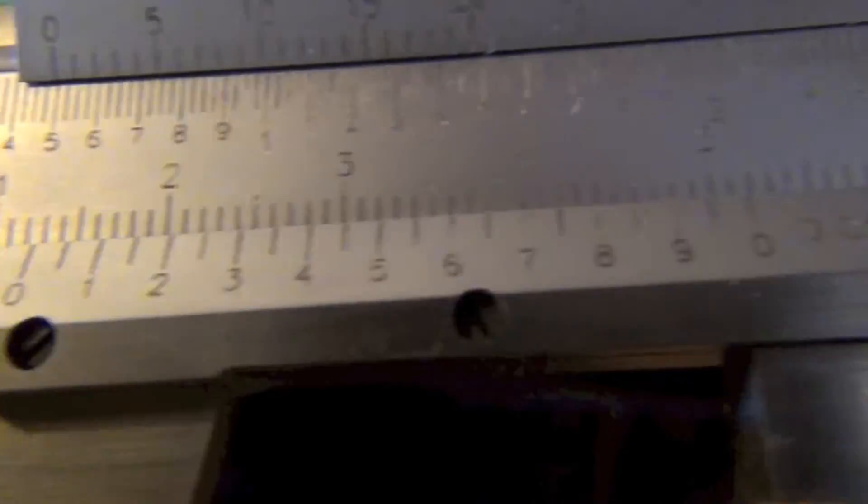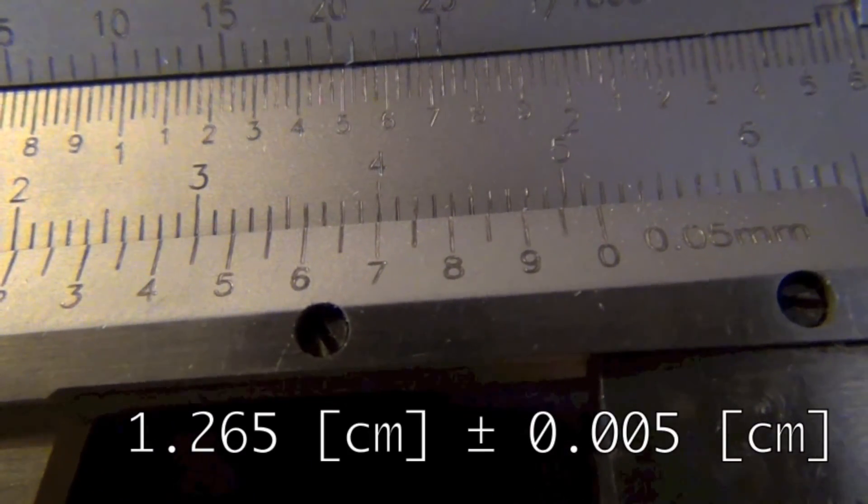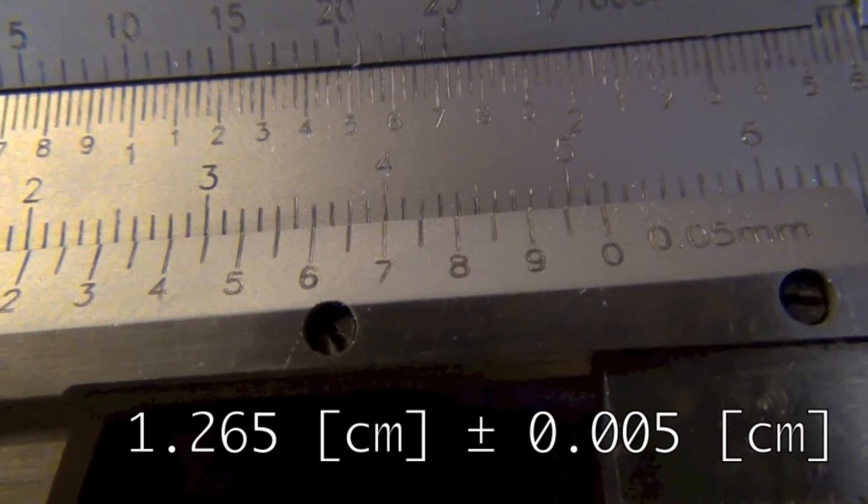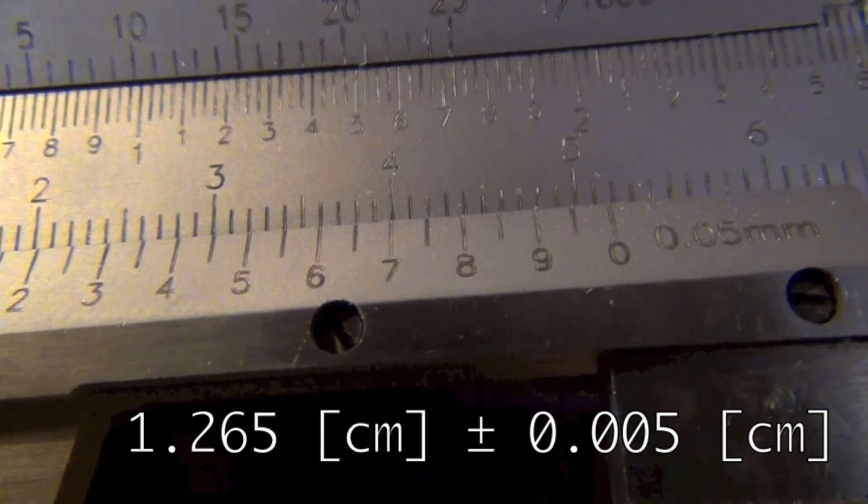So we'd read this number as 1.2 because the zero's past the 1.2, 1.265, that's centimeters, 1.265 centimeters.